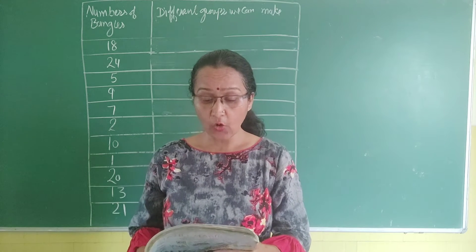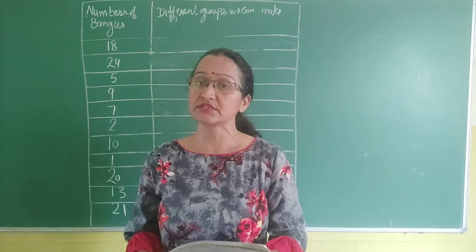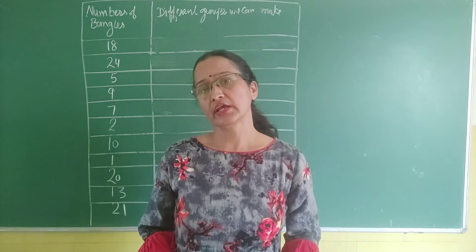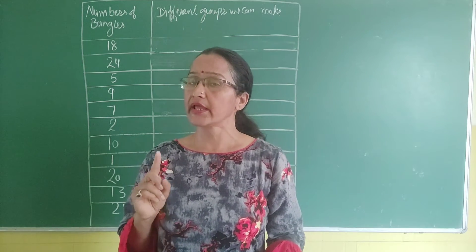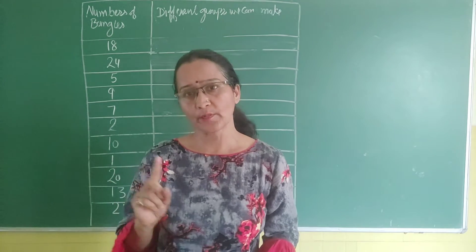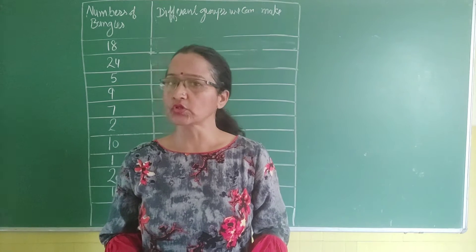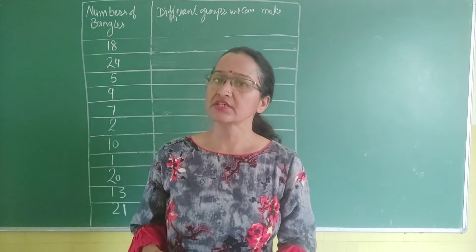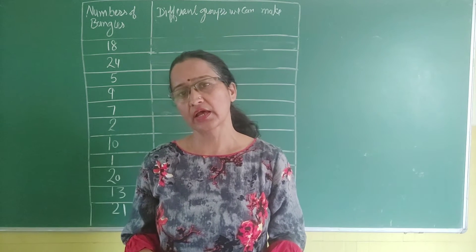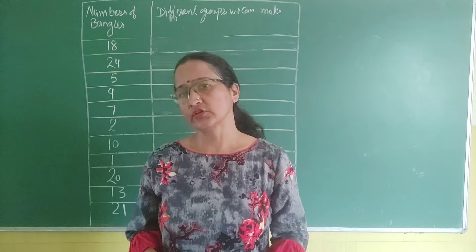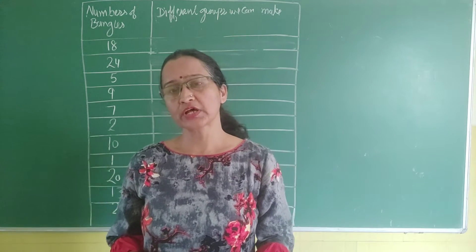Now the question is: how many groups will she have if she makes groups of 1 bangle each? If she has 18 bangles and makes one-one bangle groups, then the total number of groups is 18. So the number of groups are 18.